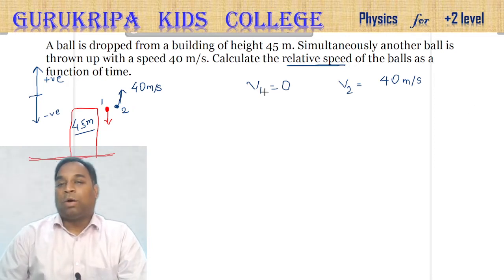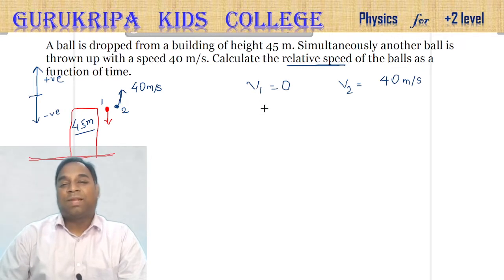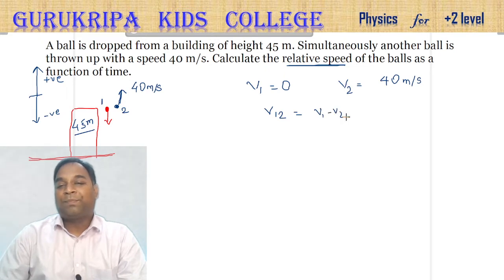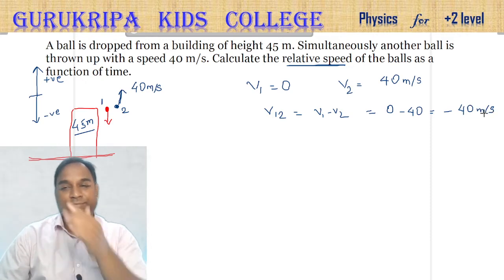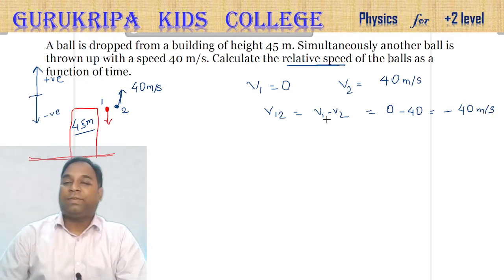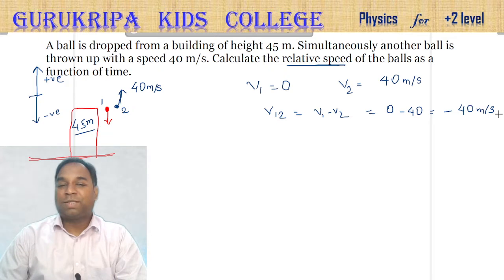So what is V1 with respect to 2? That will be V1 minus V2, which equals 0 minus 40 = minus 40 meters per second. This is the relative velocity of ball 1 with respect to ball 2. It seems like a simple question, but wait.